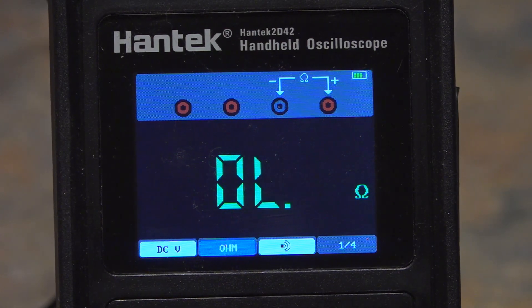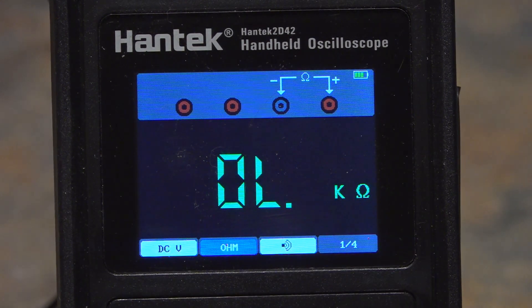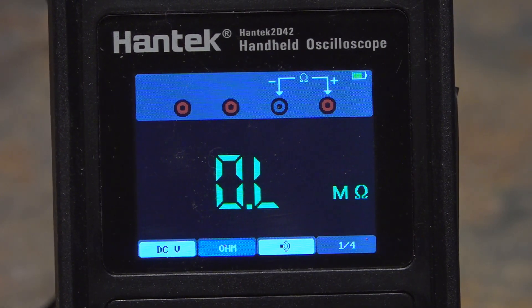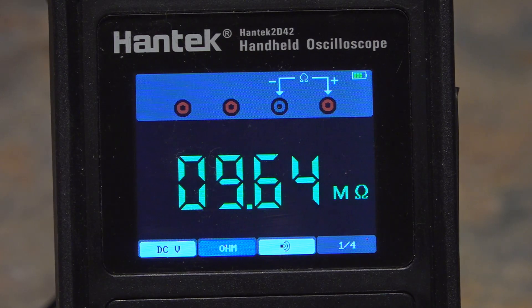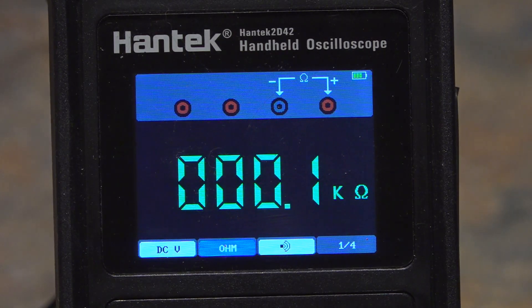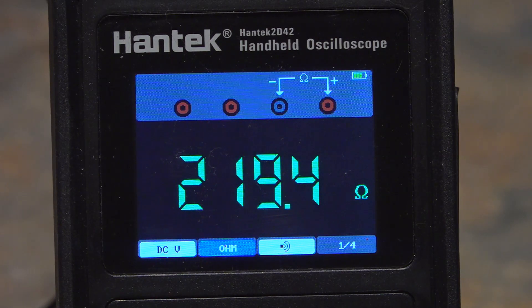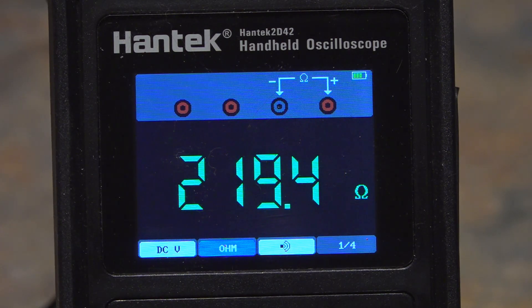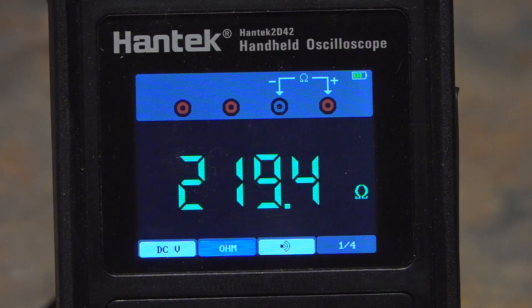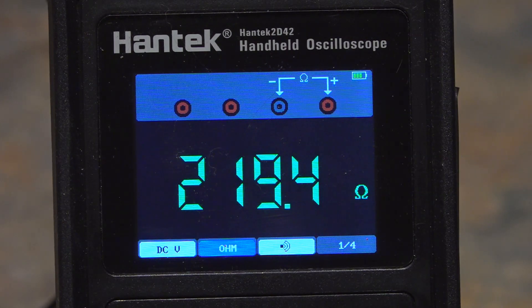This last resistor is a 220 ohm resistor which comes in at 219.4, so that's better than half a percent. We can just call that 220 and move forward from there.